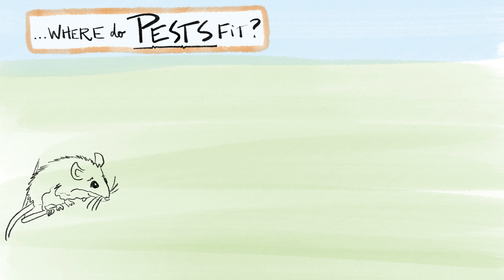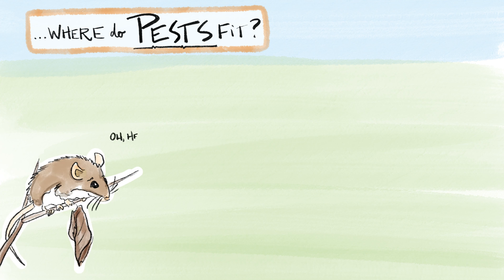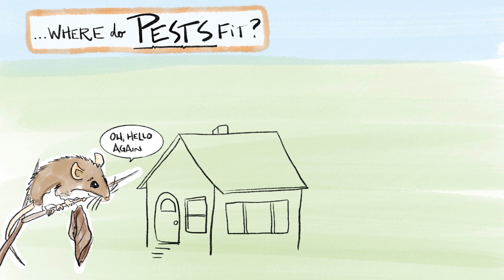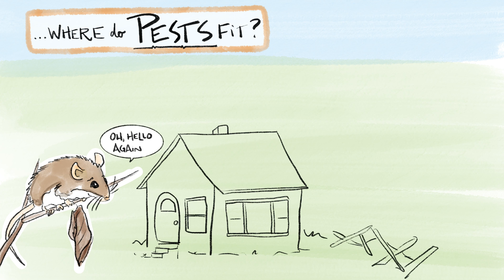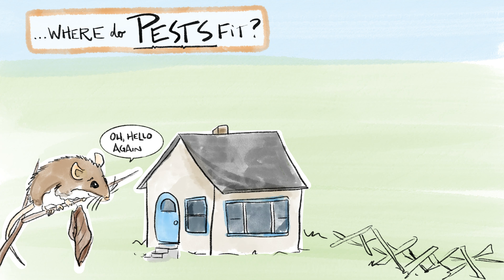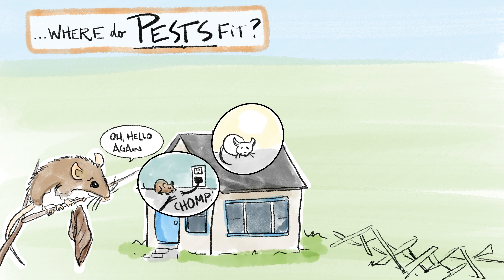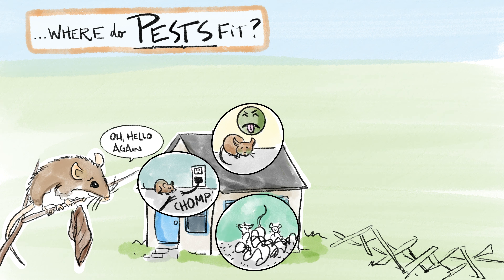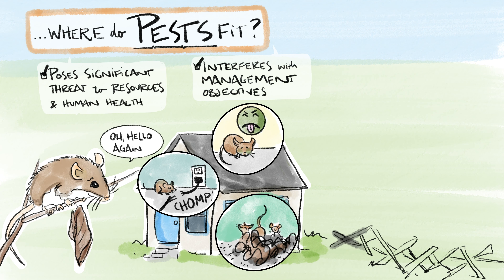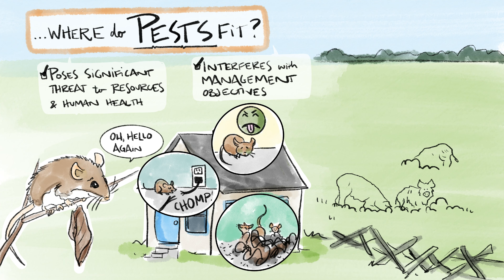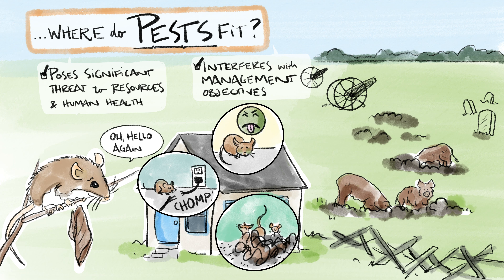Now you may be thinking, where do pests fit into all of this? Let's bring back our old friend the white-footed mouse. The white-footed mouse is a native species throughout the eastern United States when found in nature. But when found in and around structures, the mouse poses significant threats to resources and human health, and it's considered to be a pest. A pest is any organism that interferes with management objectives or threatens human health or safety. A pest can be native or non-native. All invasive species are pests, but not all pests are invasive species.